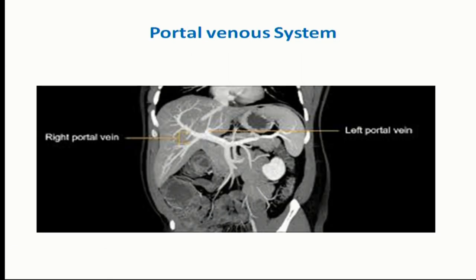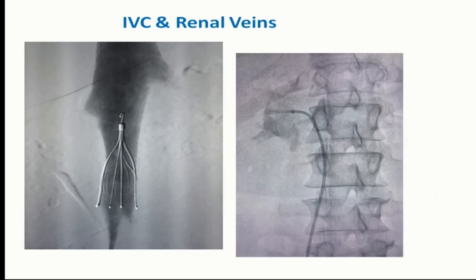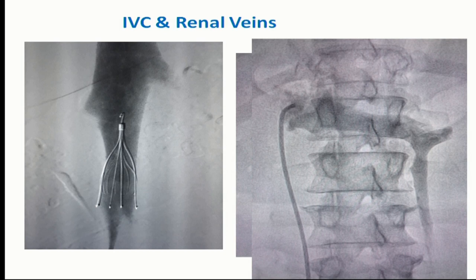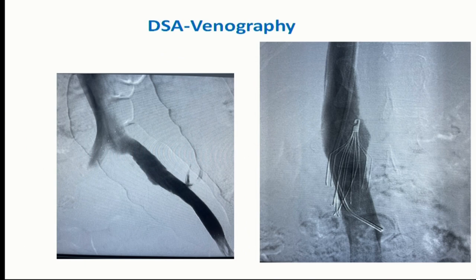The portal venous system on CT venography shows the splenic vein, SMV, portal vein, and left and right portal branches draining to the liver. Maximum blood supply to the liver is via the portal vein — 80% — and 20% by the hepatic artery. On DSA IVC gram, you can see the right renal vein and left renal vein — the right renal vein is lower than the left renal vein. An IVC filter is seen. On the left renal vein, you can see the gonadal vein with flow going downward, important in varicocele cases.